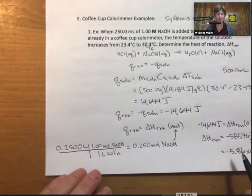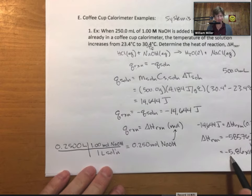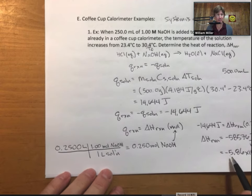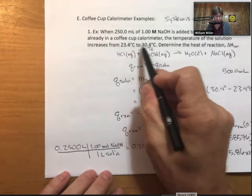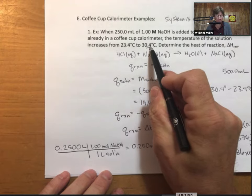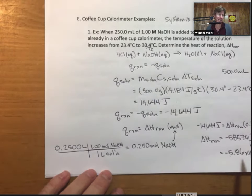This delta H is negative because the reaction is exothermic. An exothermic reaction heats up the solution, so positive temperature change for the solution means negative value for delta H reaction.